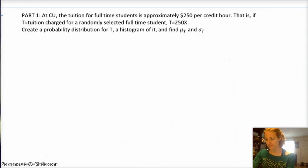All right, part one, tuition. Okay, tuition for a full-time student is about $250 per credit hour. So, if we let our random variable, our new random variable be t, which is the tuition charged for a randomly selected full-time student, then t is going to be equal to 250 times the number of credit hours that they have, right? Which is where that comes from.